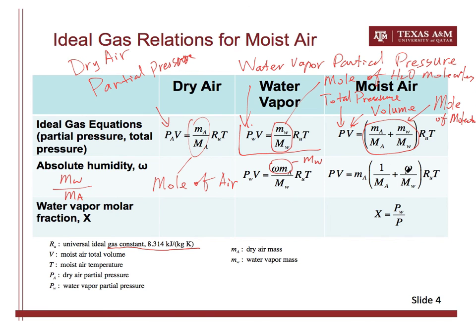We can also use the absolute humidity, or humidity ratio, in the moist air ideal gas equation of state. Further, we can introduce the concept of water vapor molar fraction, which is the ratio of the partial pressure of water vapor to the total pressure. The water vapor molar fraction is not frequently used in moist air analysis, but it is a useful concept to know.